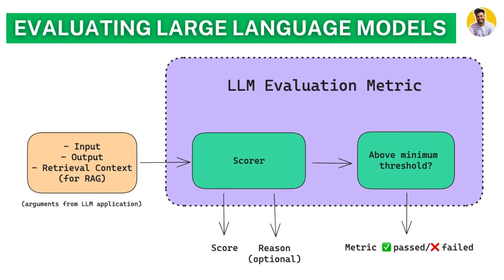When you are building the large language model evaluation framework, you build it from the input, output, and the RAG pipeline. Whenever you generate output, you pass that output to the evaluation framework. That framework generates a score, and based on that score you set a threshold — if the score is above the threshold, the output passes; otherwise it is marked as fail.